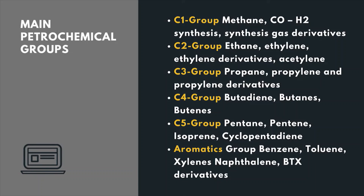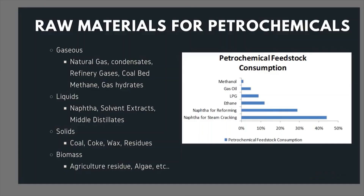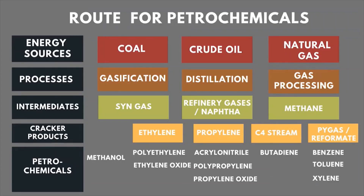BTX stands for benzene, toluene and xylene. Looking at different sources for manufacturing petrochemicals, they can be produced from gaseous, liquid, solid or biomass sources. Gaseous sources include natural gas, condensate, refinery gases, coal bed methane, and gas hydrates. Liquid sources include naphtha, solvent extracts and middle distillates. Solid sources cover coal, coke, wax and residue. Apart from these, we also have biomass — agricultural residue, algae, etc. Now let us understand the routes for manufacturing petrochemicals from these different sources.